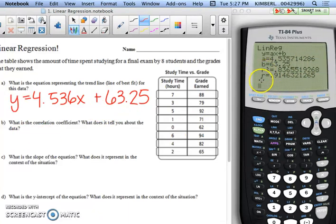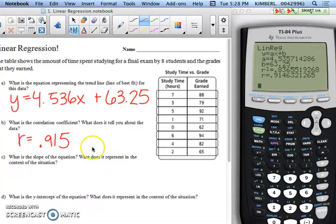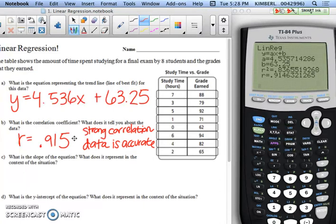Correlation coefficient is the r, so you're going to ignore the r squared. You're going to say that the correlation coefficient is 0.915. The reason it's a 5 is because this 6 bumps that 4 up to a 5. What does it tell you about the data? Remember, the closer to 1 the data is, the stronger it is, and so this tells you it's a pretty strong correlation. So the data is pretty accurate.